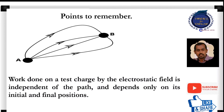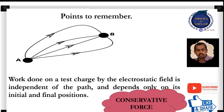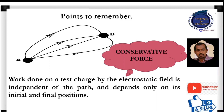Here there are two points A and B. A test charge will be moving from A to B via different paths. It might take different paths, but still we can see that the work done on the test charge by the electrostatic field is independent of the path and depends only on its initial and final position. Whatever may be the path followed, the work done will be the same. This means that electrostatic force is a conservative force.